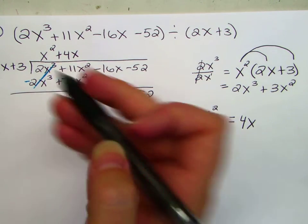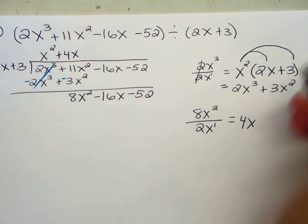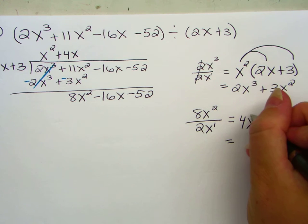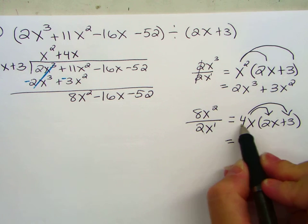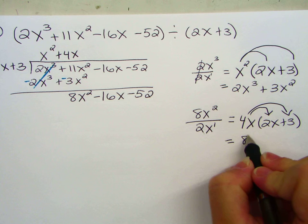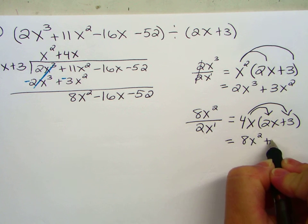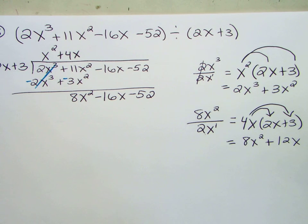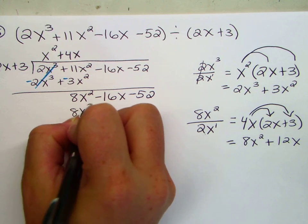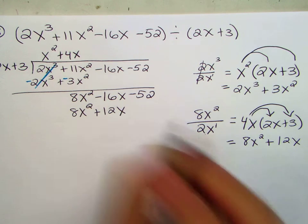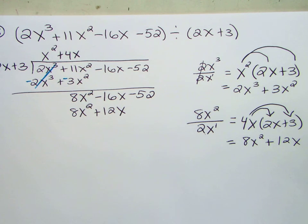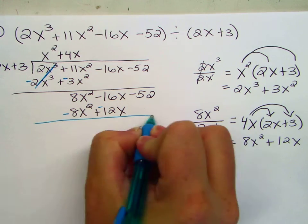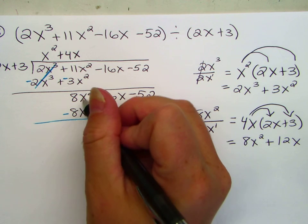And then we multiply. We need to do 4x times 2x plus 3. I'm going to write 2x plus 3 on the side. Distribute. 4 times 2 is 8, x times x is x squared, plus 4x times 3 is 12x. That's what's going underneath. 8x squared plus 12x. What are we doing? Subtracting. Subtract, subtract, change the sign of everything. The 8's cancel. 8 minus 8 is 0.